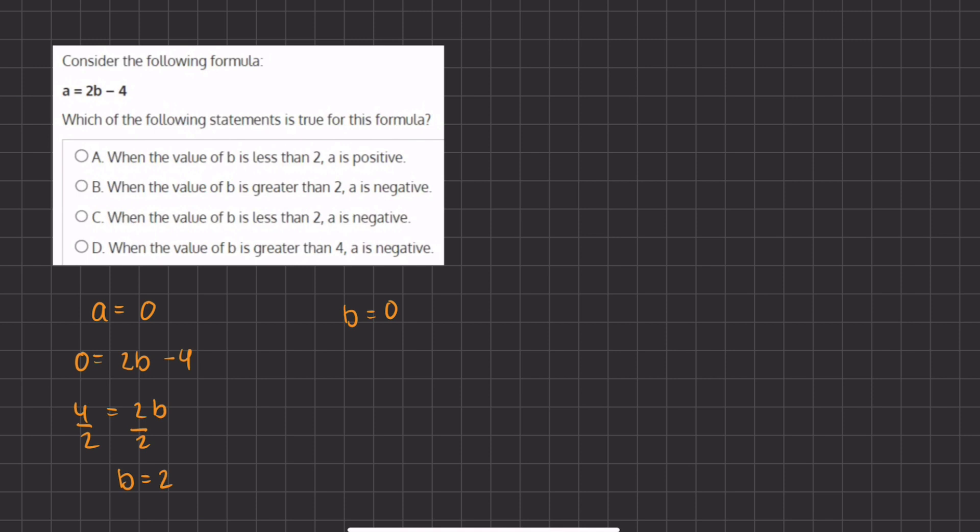So that's going to be our first point when a equals 0 and b equals 2. Now we're going to find our second point when b equals 0. So let's plug that in. We have a equals 2 times 0 minus 4, and we have a equals negative 4. So that's going to be our second point.